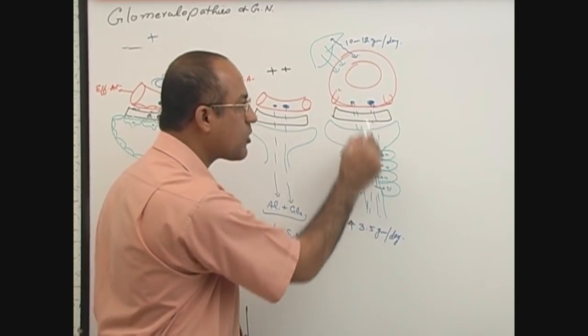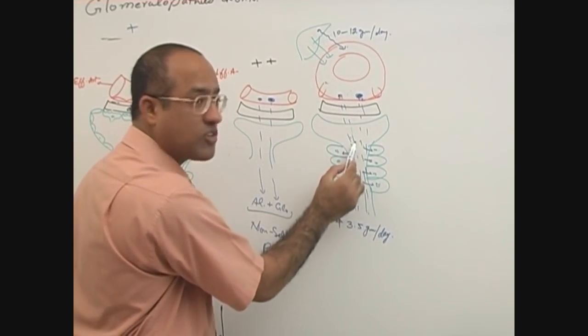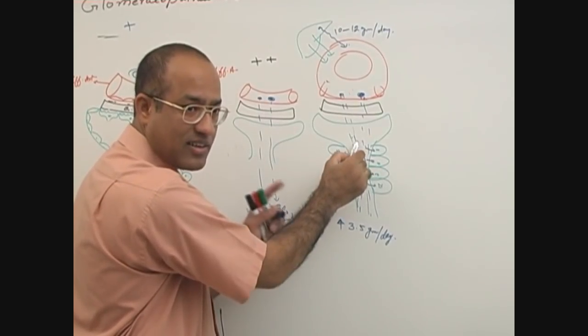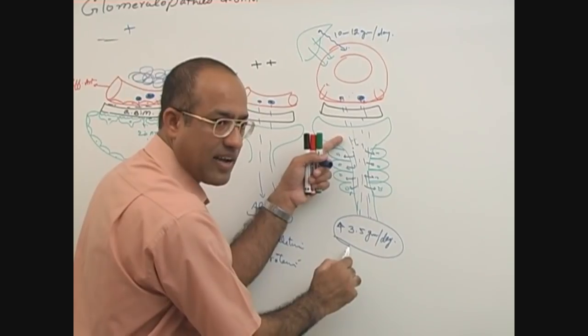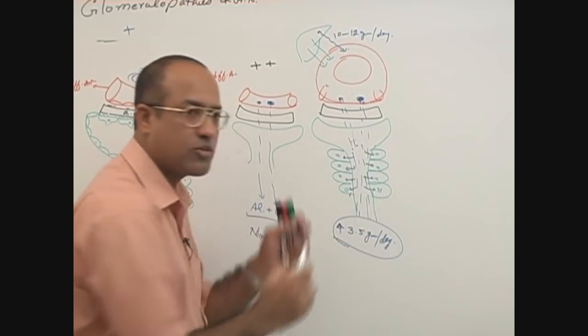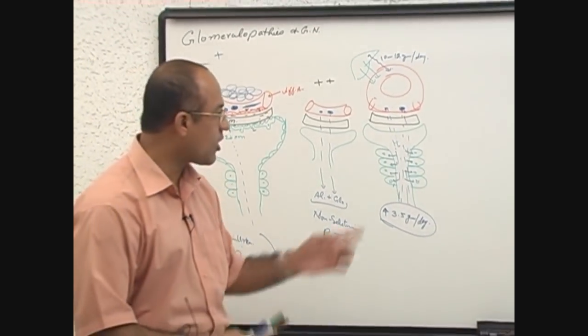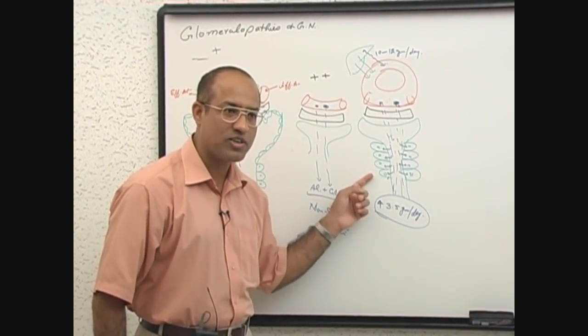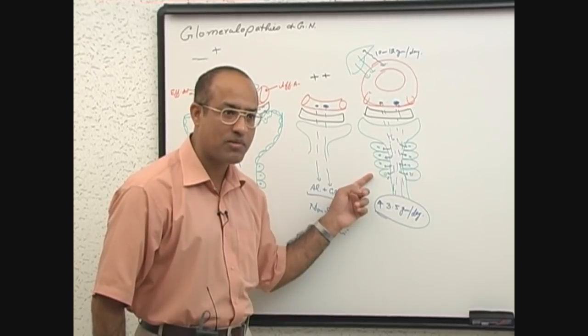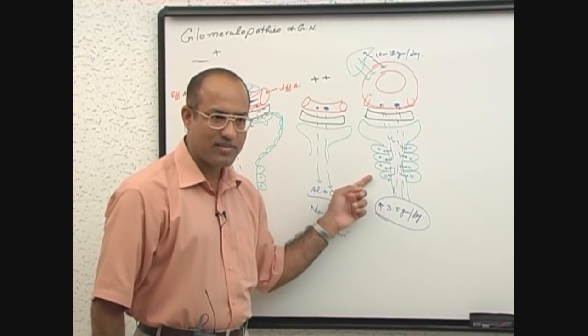Whenever extra proteins are lost from the blood to the Bowman's space, only some proteins appear into urine and a lot is destroyed in the proximal convoluted tubule. And this is the loss you are not concentrating on. Proximal convoluted tubules are concerned with the catabolism of small molecular weight proteins.